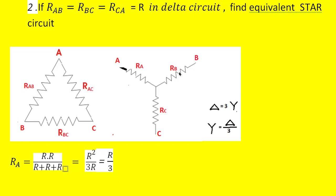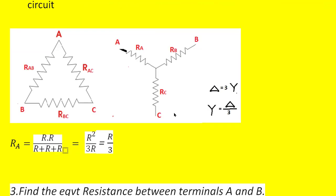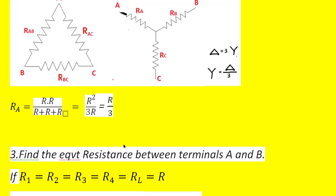Similarly for Rb we get the same value R/3, and for Rc also we get R/3. As already seen in theory, if you know the delta and want the equivalent star, divide the delta values by three. Since all delta branch resistances are R, each star branch is R/3.